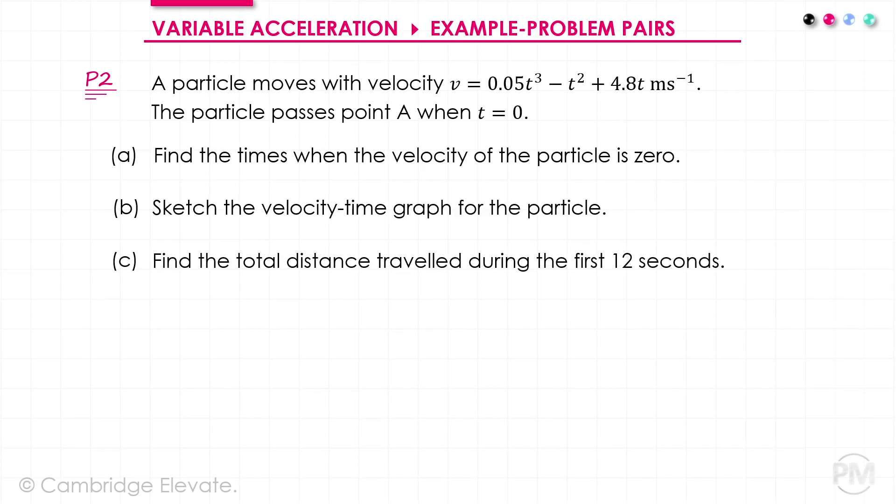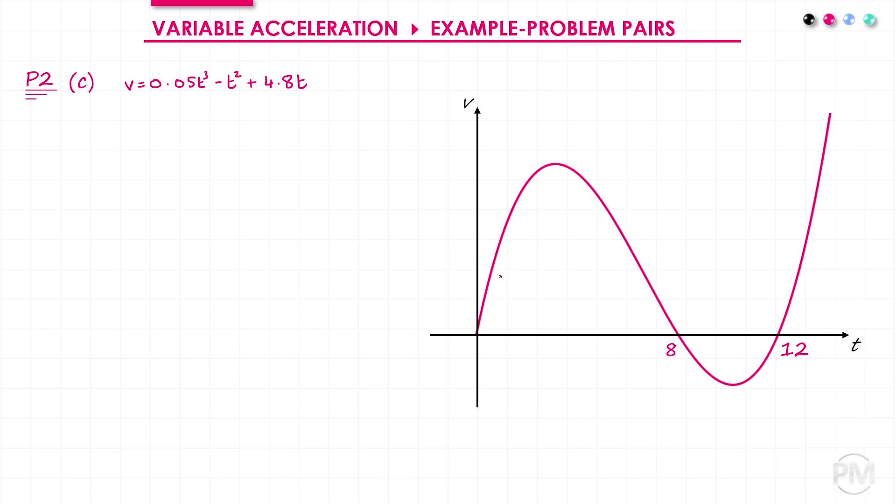In part C, I need to find the total distance travelled during the first 12 seconds. Just like in the example, I've got two separate regions to my graph. I've got one region I'll call D1, where the curve is above the axis. And another region I'll call D2, where the curve was below the axis. So, to find the total distance travelled, I'm going to find D1 and D2 separately, and then add the magnitudes of those values together.